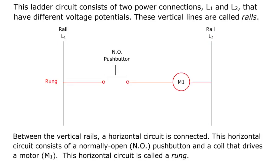Between the vertical rails, a horizontal circuit is connected. This horizontal circuit consists of a normally open pushbutton and a coil that drives a motor, M1. This horizontal circuit is called a rung.